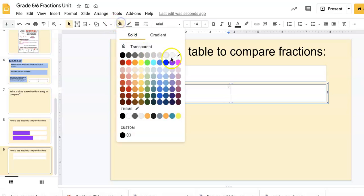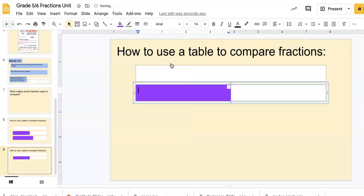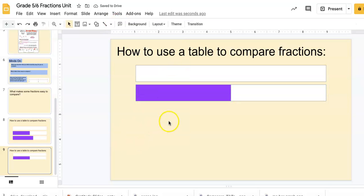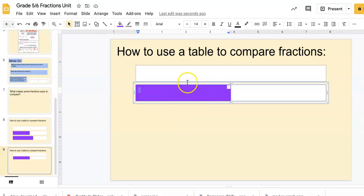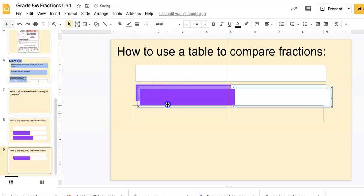Fill one half with a dark color so you can see that this represents one half. Now if I wanted to compare halves to fifths, I can copy and paste this one again and put it directly below.